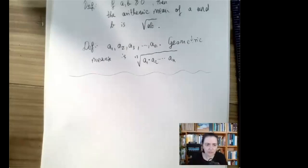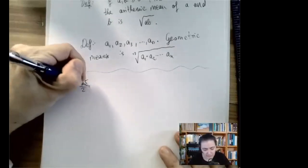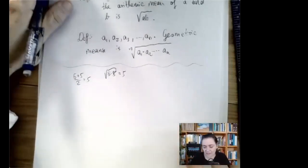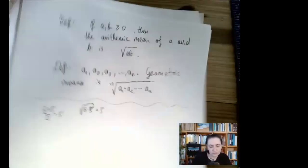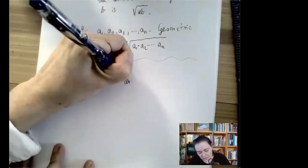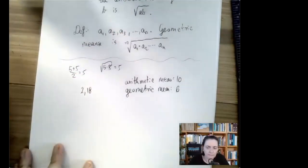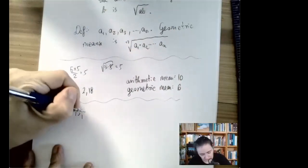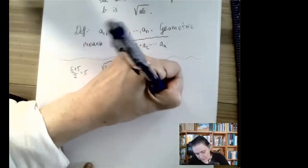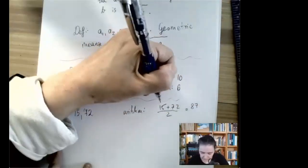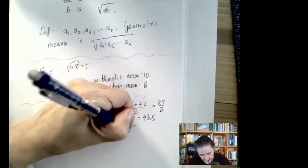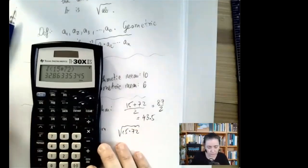There are analogous ideas under different operations. If you start with two equal numbers, the arithmetic mean gives back the same number: five plus five over two is five. The same holds for the geometric mean: the square root of five times five is five. Going back to the nice numbers two and eighteen: the arithmetic mean is ten and the geometric mean is six. For less pleasant numbers, say fifteen and seventy-two: the arithmetic mean is 43.5 and the geometric mean is approximately 32.86.